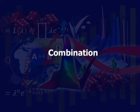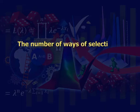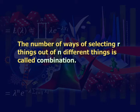Let us see combination. The number of ways of selecting r things out of n different things is called combination.